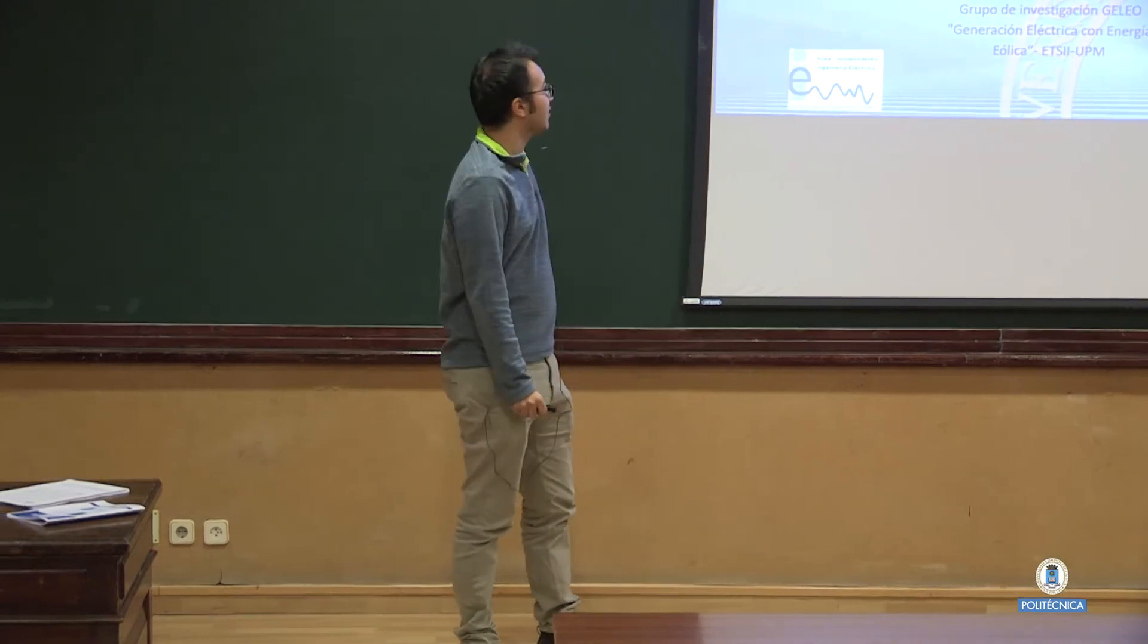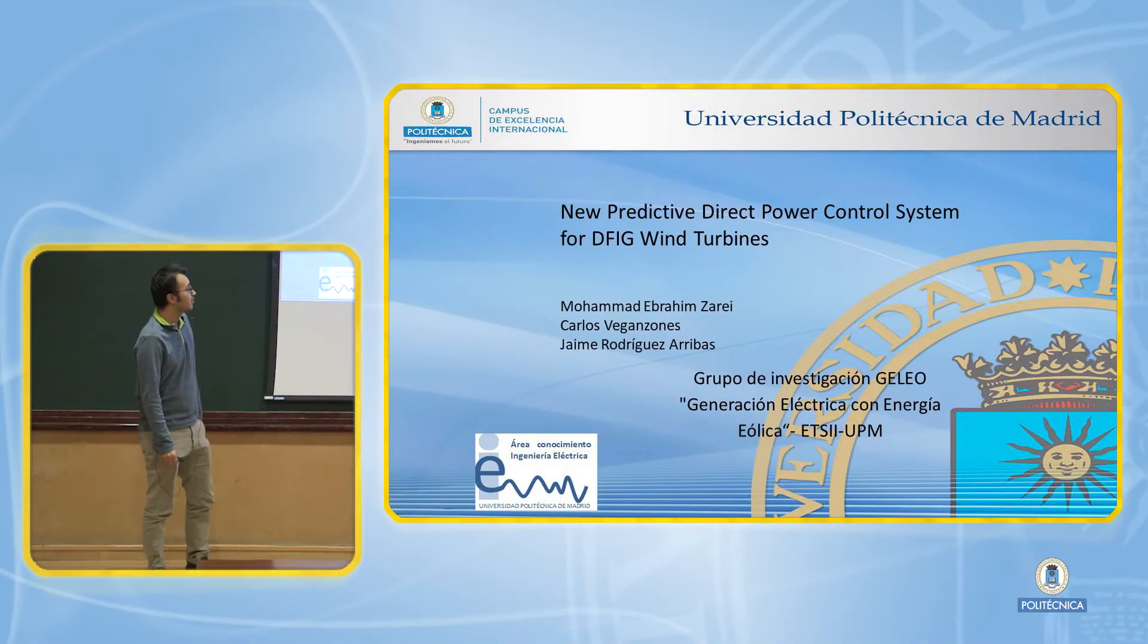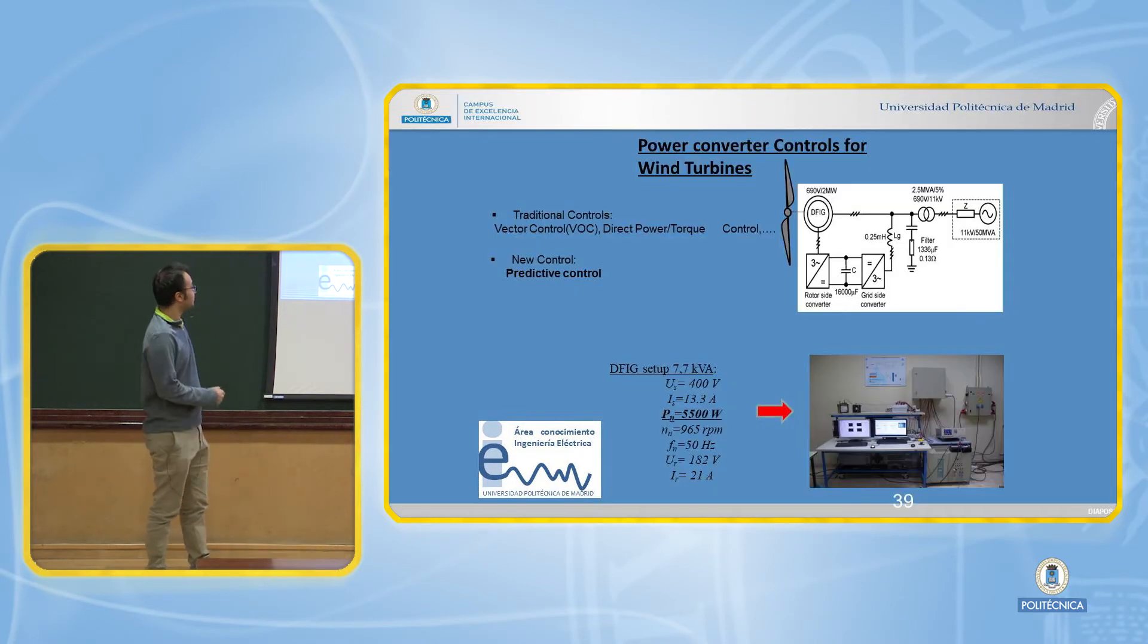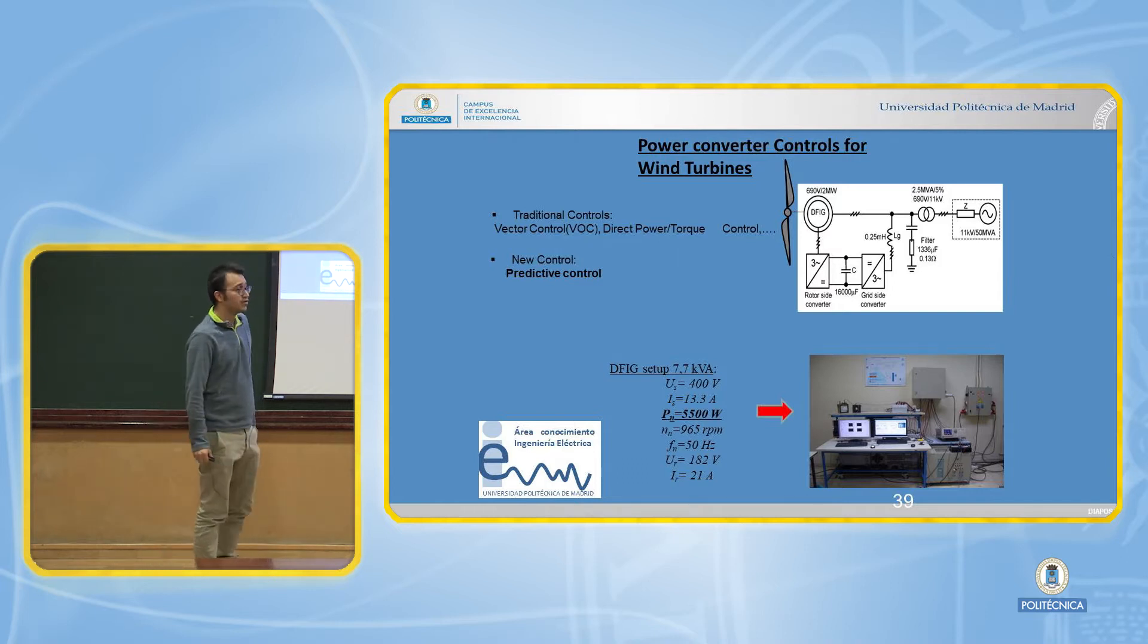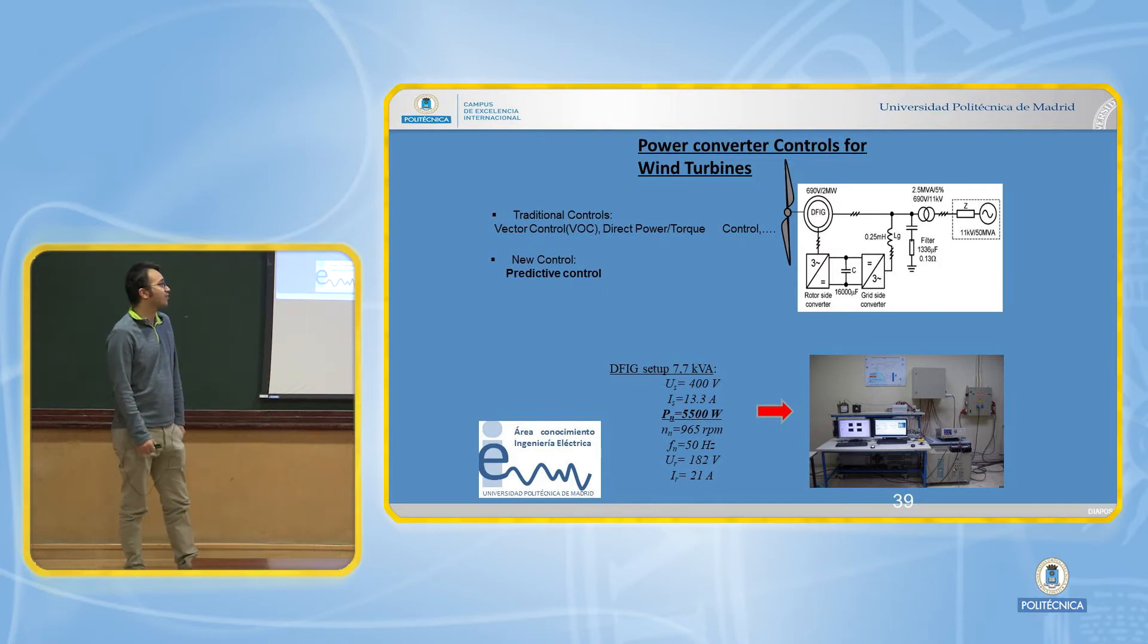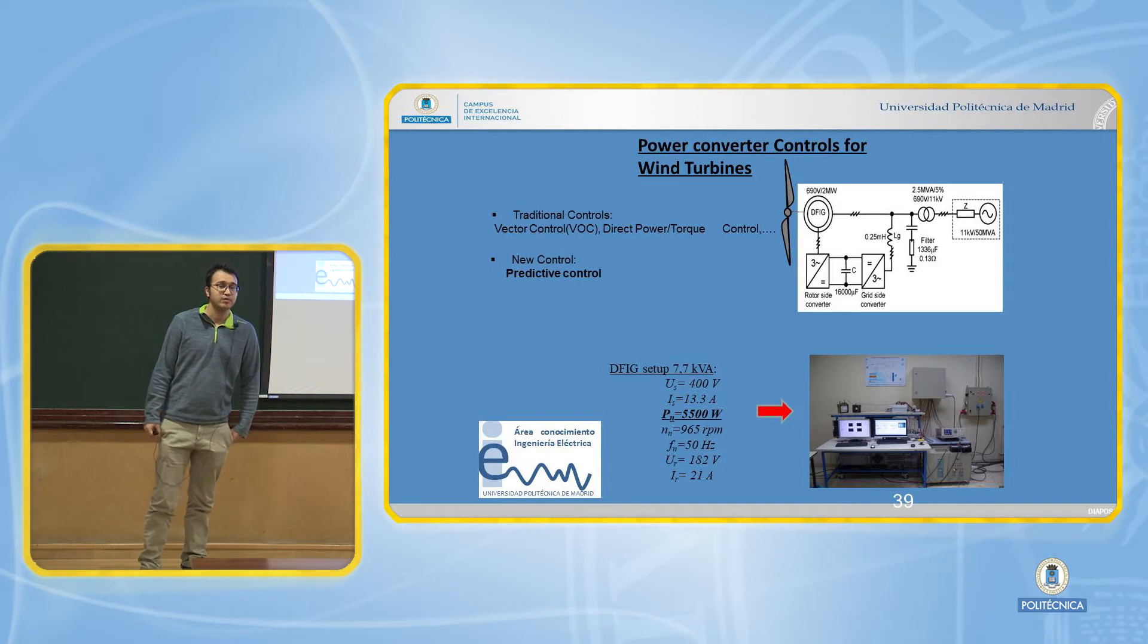My thesis is about the new predictive direct power control system for WFID induction generators. The WFID induction generators consist of two power electronic converters. One is the grid side converter, which maintains the DC link voltage and injects or absorbs reactive power from the grid. The other is the rotor side converter, which controls the electrical machines and injects active and reactive power to the grid.